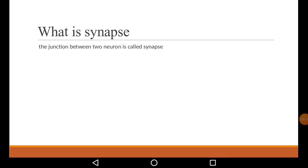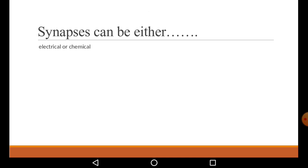What is called a synapse? A synapse is a junction between two neurons. Synapse can either be electrical as well as chemical.